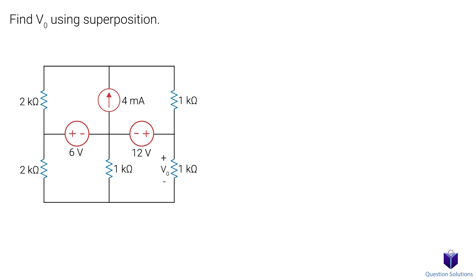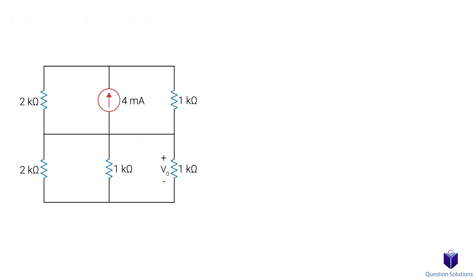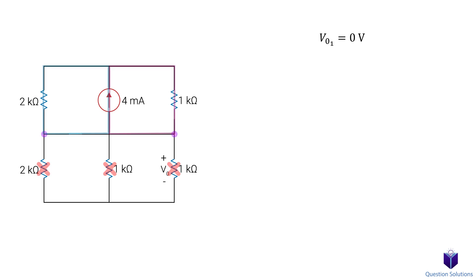Let's take a look at this problem, where we need to find V0 using superposition. So we can start by removing the voltage sources and figuring out the voltage of the resistor with just the current source. Something really interesting happens when we do this. Notice how this creates a short circuit between this point and this point. That means the current will not flow into any of these resistors at the bottom of our circuit. It will take the easiest path by going through this loop and this loop. So right away, we know the voltage in this resistor is zero with just the current source.